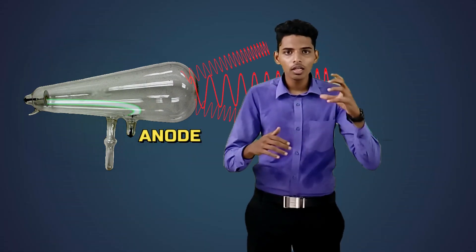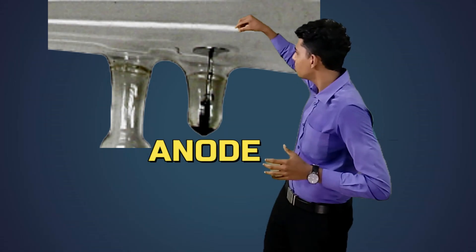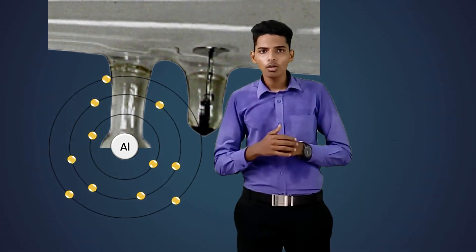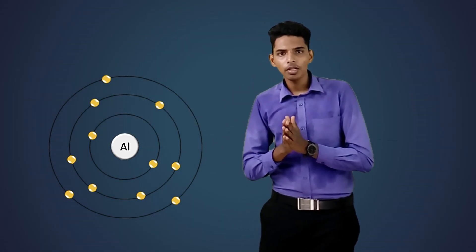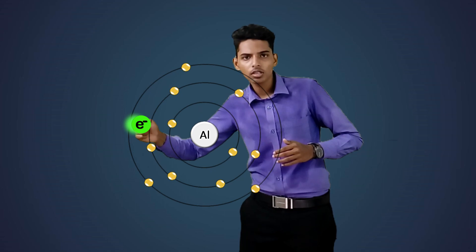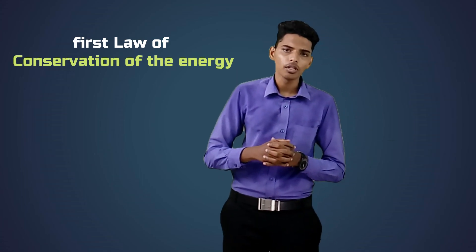Now we will see how X-rays are produced when these high-velocity electrons hit the anode. When these high-velocity electrons hit the anode, X-rays are produced. This process happens inside the atom of the anode. Let me take a single atom from the anode to show here. When the kinetic energy of this electron is stopped by the electron present inside the atom of the anode, the first law of conservation of energy comes into play.